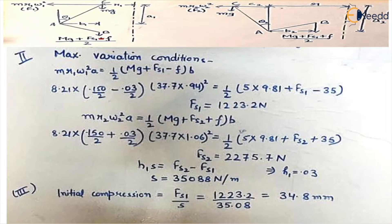Now the second condition says for the maximum variation conditions. Again, the same formula: MR1 omega 1 square A equals half mg plus Fs1 minus F frictional force into B. We have already calculated the value of M, which is 8.21. Omega we know is 37.7, and now because there is 6% change, so 6% reduction is 0.94. Radius, we are already given the difference - the 30mm is given from the axis, so we subtract. This value equals half mg, Fs1 is not given, that we have to calculate, minus frictional force. Rest all the values are given, so we'll get the value of Fs1, the spring force in case 1.